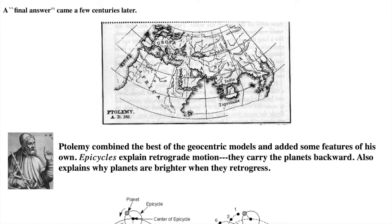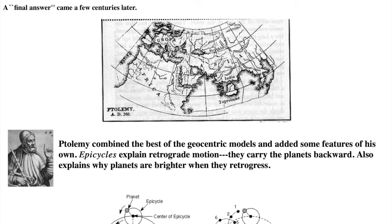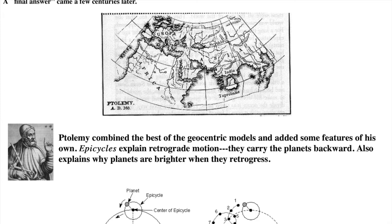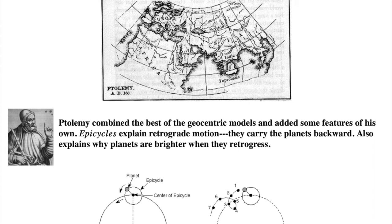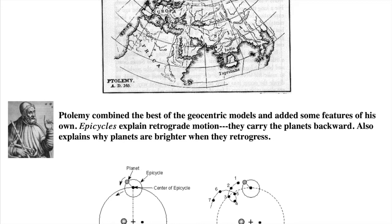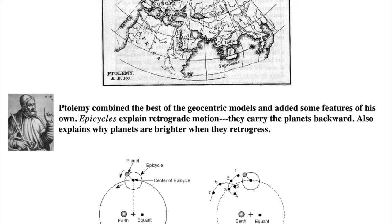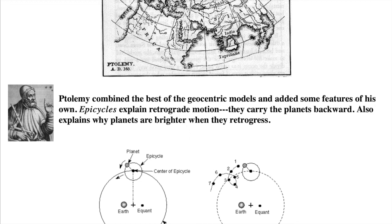A few centuries later, Ptolemy created a geocentric model that seemed to definitively explain retrograde motion using the best features of various geocentric models and the most accurate observations of his time. This model would last for about 1500 years, which is why I have the word final in quotes. He added some refinements to explain the details of the observations. An eccentric for each planet that was the true center of its motion, not the Earth. And an equant about which each planet moved uniformly in relation to, not the Earth. But the key thing that explained retrograde motion is the epicycle.